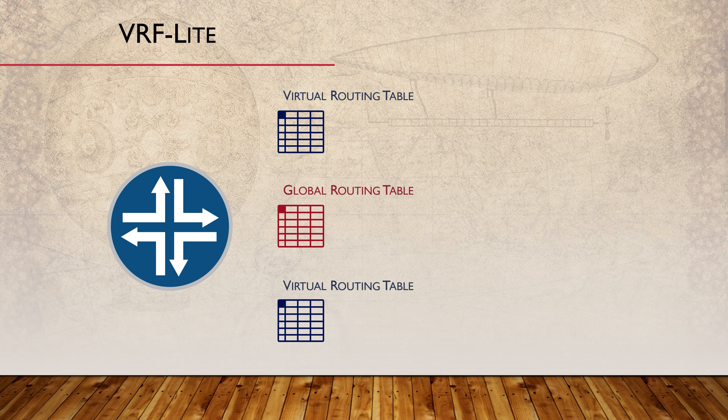Using VRF Lite, we can create additional virtual routing tables and assign layer 3 interfaces to them. We can also configure routing protocols to use them. There are plenty of reasons why we might want to do this, but for an overview, let's focus on just one.